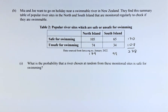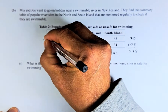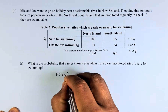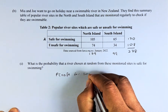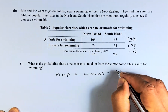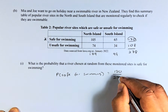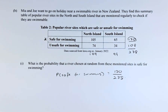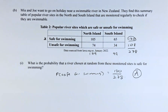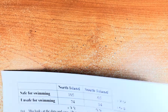What is the probability that a river chosen at random from this monitored site is safe for swimming? We look at safe — the total safe rivers are 170 out of the total 278. You are not making any comparison, so you do not need to convert to decimal. If you can get this right, you get an easy achievement in this paper.